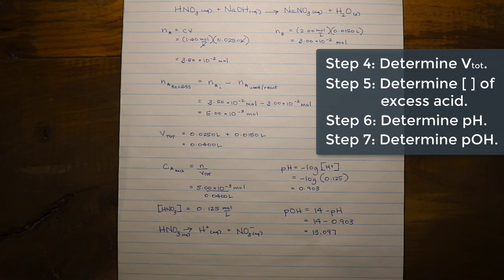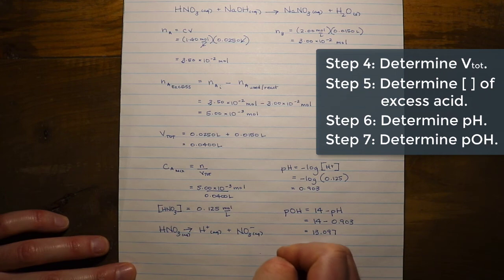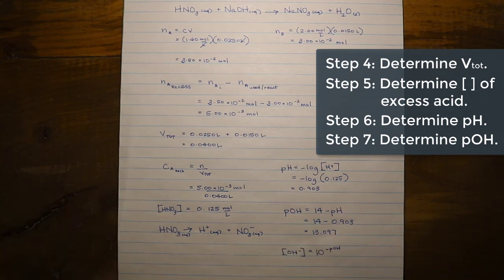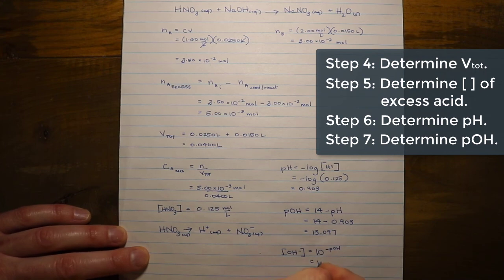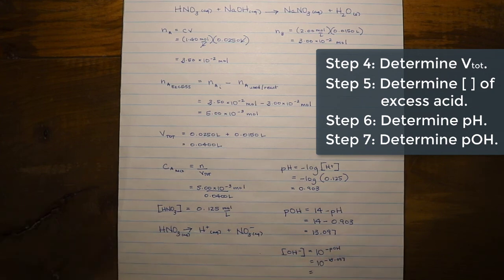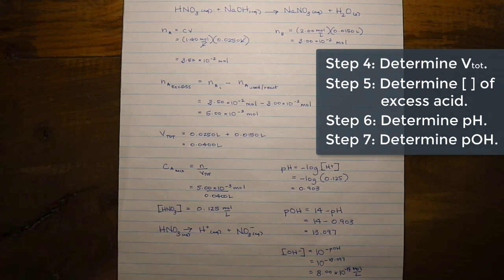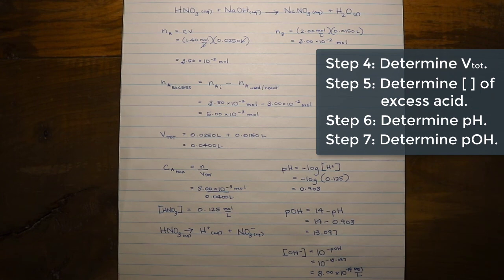Now that we have the pOH, we can calculate the hydroxide ion concentration: [OH⁻] = 10^(−13.097) = 8.00 × 10⁻¹⁴ mol/L. This is an extremely low concentration, which makes sense because the solution is acidic. Acidic solutions are not devoid of hydroxide ions, nor are basic solutions devoid of hydrogen ions — it's just that one is present in much greater quantity than the other. Here, there is an excess of acid, so hydrogen ions dominate.